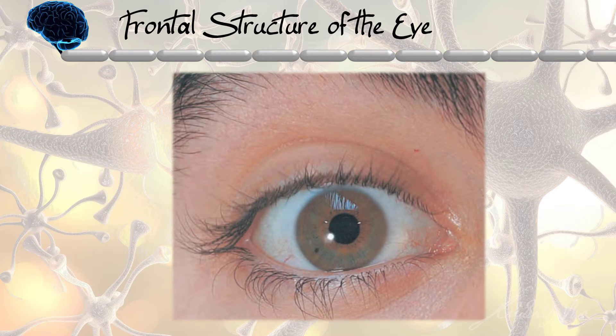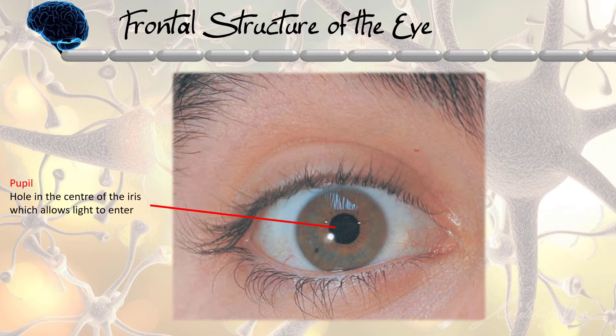First, we need to learn the names of various parts of our eyes so that you will understand what I am referring to when I use certain terms. The pupil is the hole in the center of the iris. The black-colored hole that we see in the center of our eyes is called the pupil.